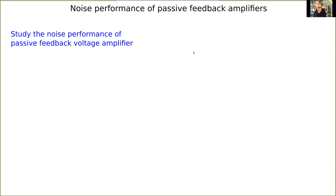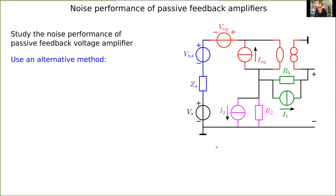This is different if we look at passive feedback. Let's study the noise performance of a passive feedback voltage amplifier. Here I have a schematic with colors: the blue represents the noise associated with the signal source VS and its source impedance; in red you see the noise of the amplifier; in green you see a feedback resistor with its associated noise current; and in magenta the noise of the other resistor. We will calculate the contribution of each of those sources at the output of the amplifier, divide by the gain to get the source-referred contribution.